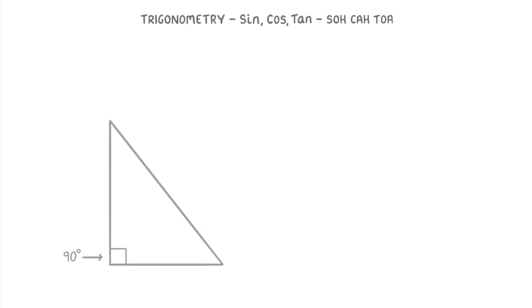The second thing to know is that this side opposite the right angle is always called the hypotenuse, which we represent with the letter H, and this will always be the longest of the three sides.